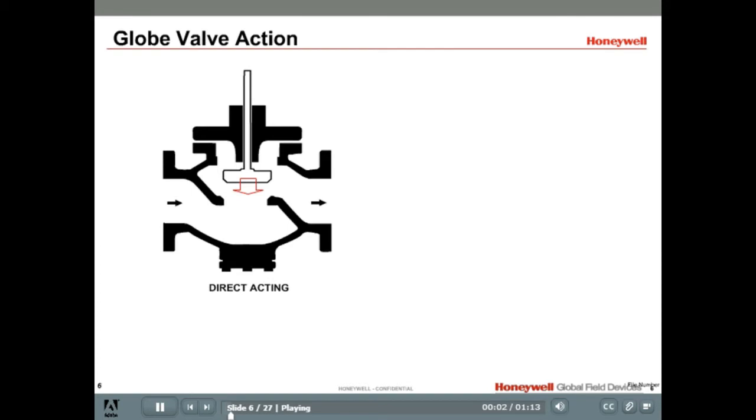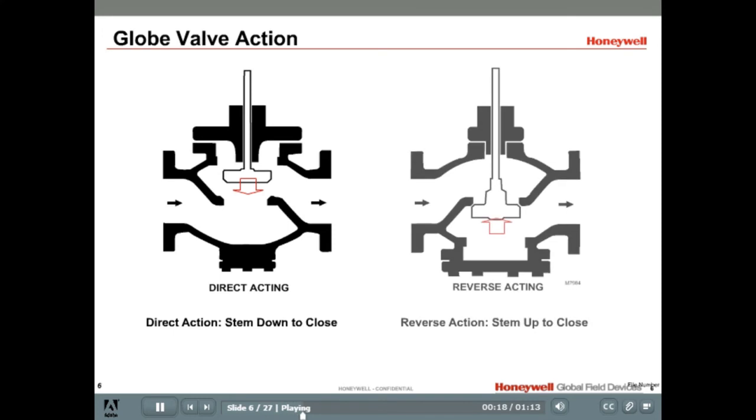A two-way globe valve may be direct-acting or reverse-acting. Direct-acting valves close when the stem is pushed down. In this diagram, you can see the stem is up and the valve is open. Pushing down on the stem will close the valve. A reverse-acting valve will open when the stem is pushed down. In this example, the valve is open when the stem is down. When the stem is pulled up, the valve closes and the flow stops.